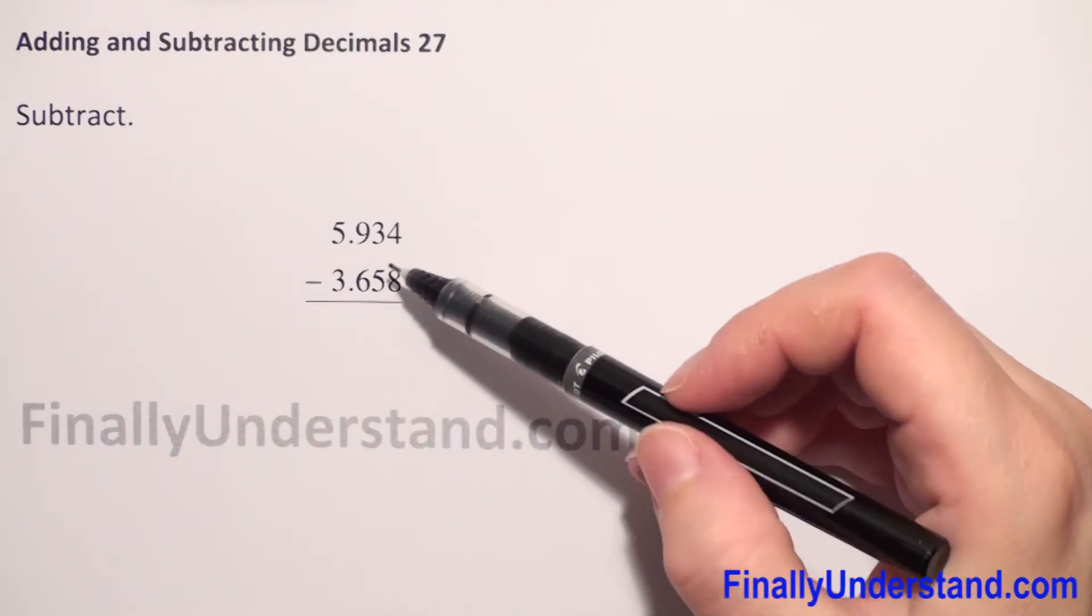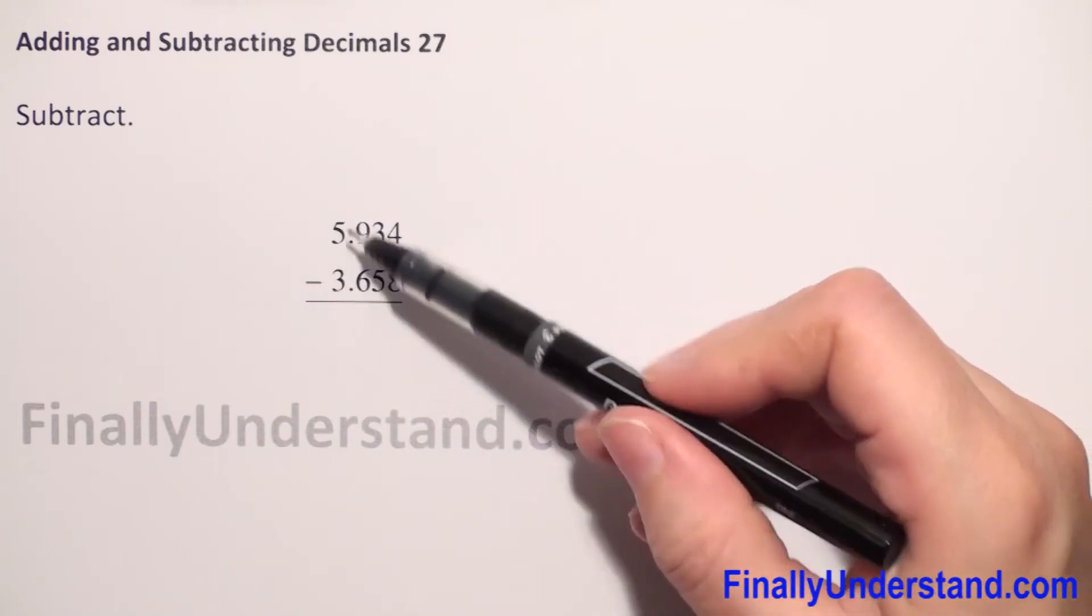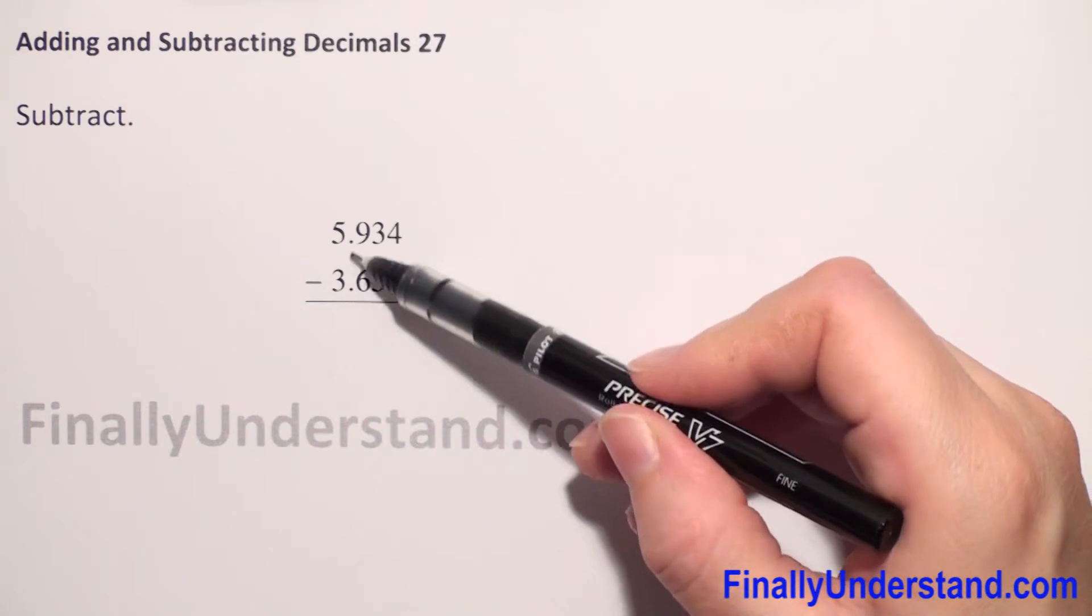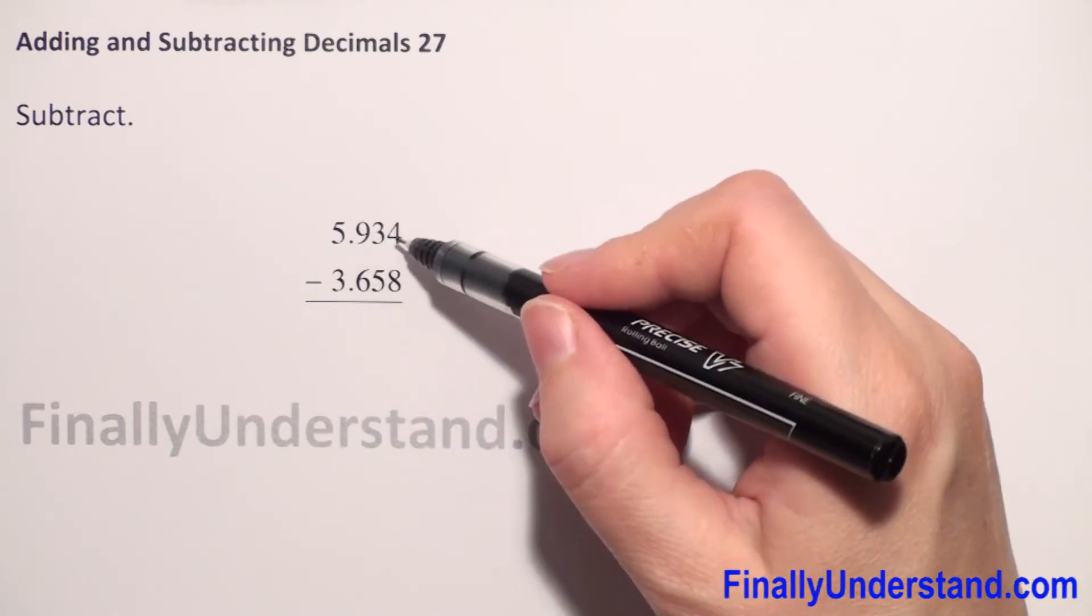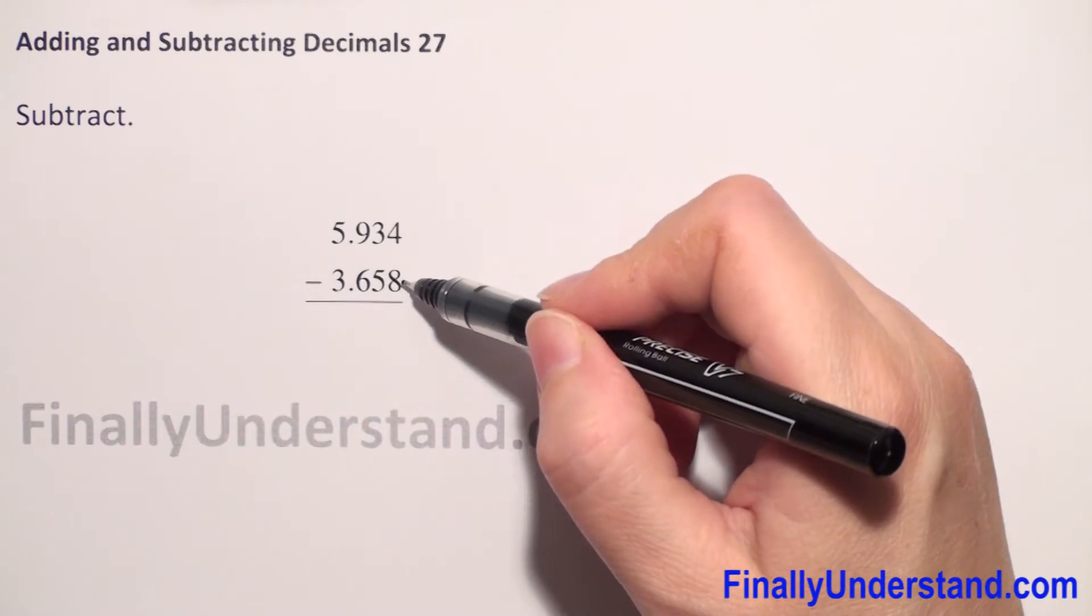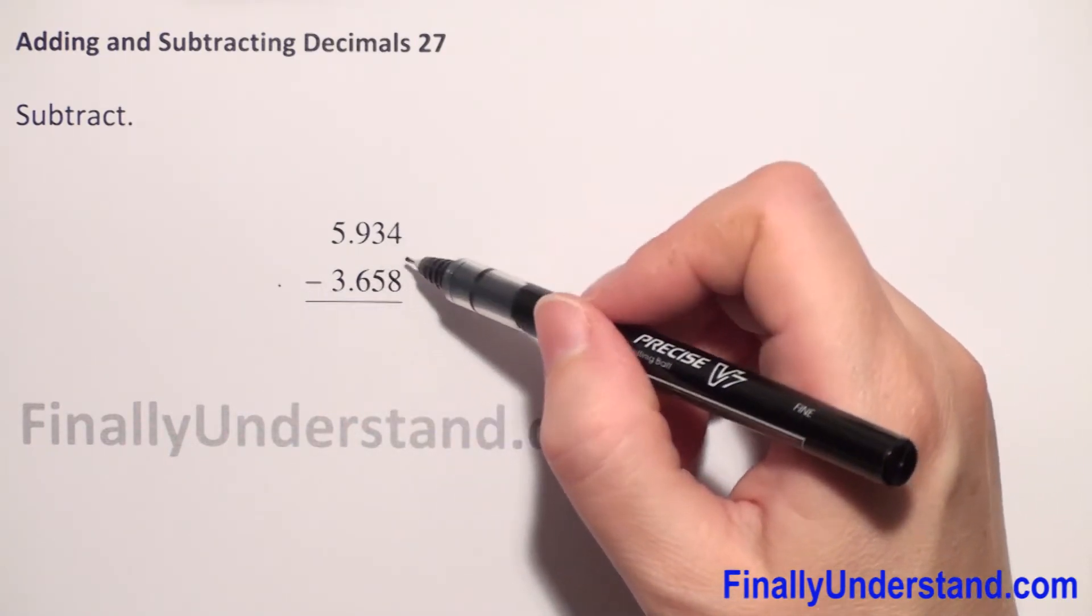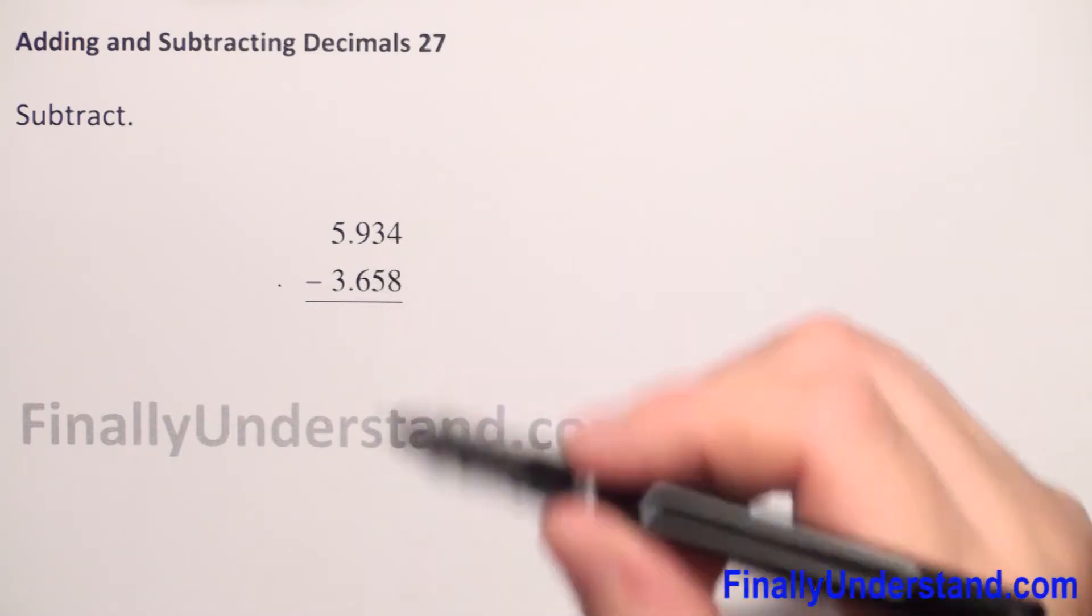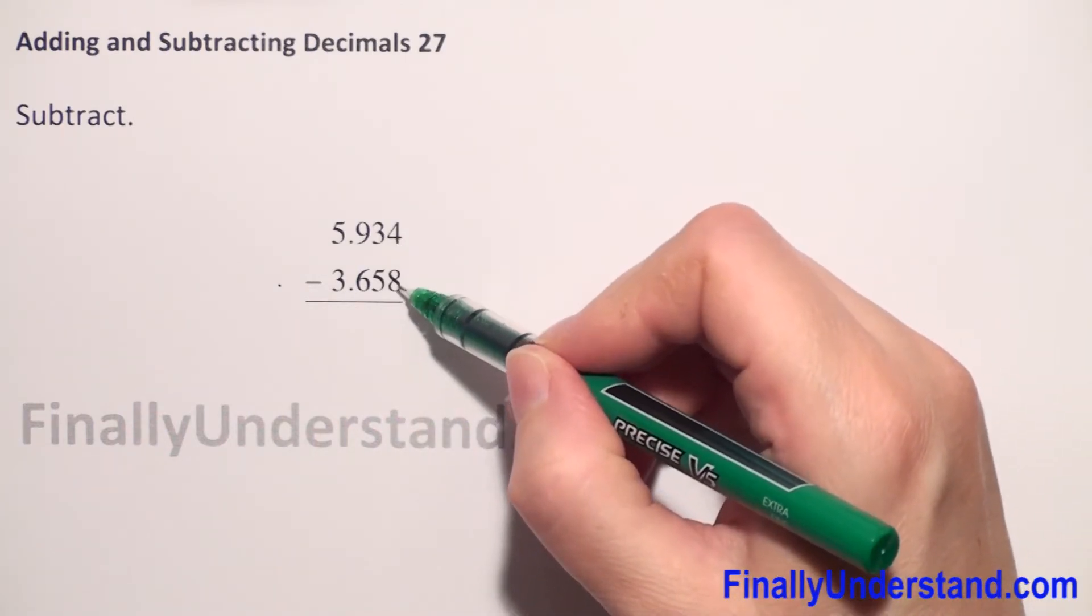When we have written our decimal numbers in vertical columns and the decimal point is in the same column, we start from the last column and go to the left side. Before we do this, in my opinion it will be easier if we first check if on the top we have a greater number than on the bottom.